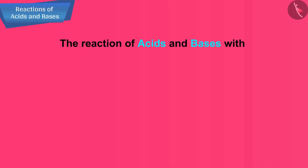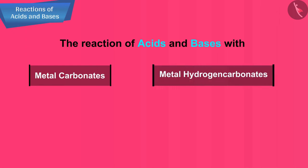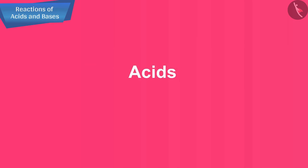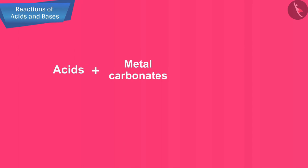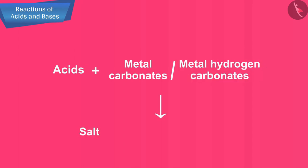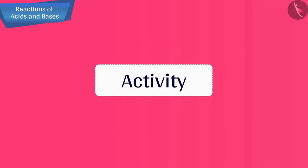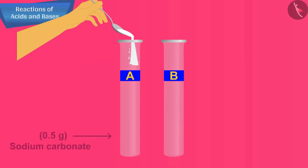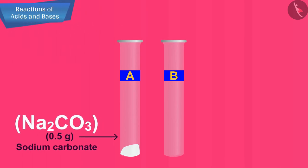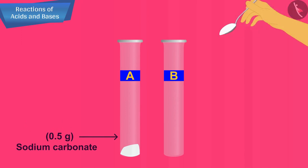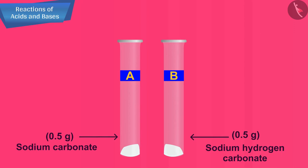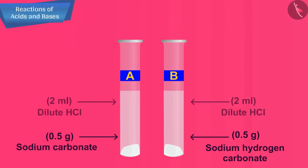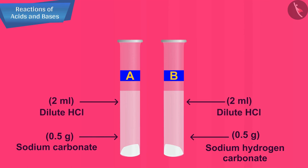Let us now discuss the reaction of acids and bases with metal carbonates and metal hydrogen carbonates. Acids react with metal carbonates and metal hydrogen carbonates to form salt, carbon dioxide, and water. Take two test tubes, label them A and B. Take about 0.5 grams of sodium carbonate (Na₂CO₃) in test tube A and about 0.5 grams of sodium hydrogen carbonate (NaHCO₃) in test tube B. Add about 2 ml of dilute HCl to both test tubes.